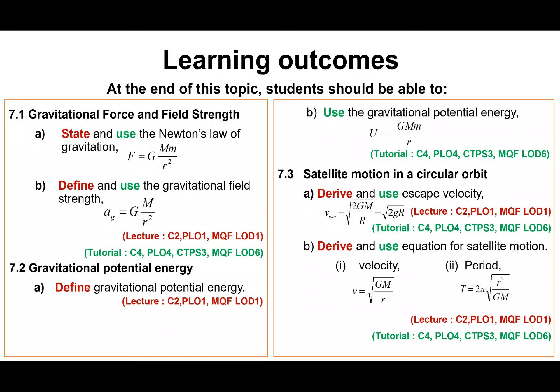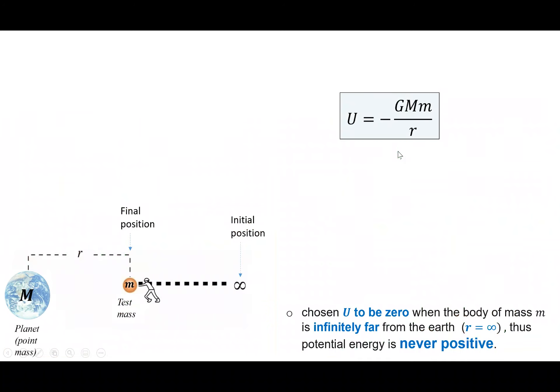Baiklah, Assalamualaikum and welcome back everybody. So we are going to proceed our discussions for subtopic 7.2, gravitational potential energy. So at the end of this video, you should know how to define what is gravitational potential energy and also you have to know how to use the gravitational potential energy using only one equation which is U equals to negative capital G M besar M kecil over R. So we start our discussion.